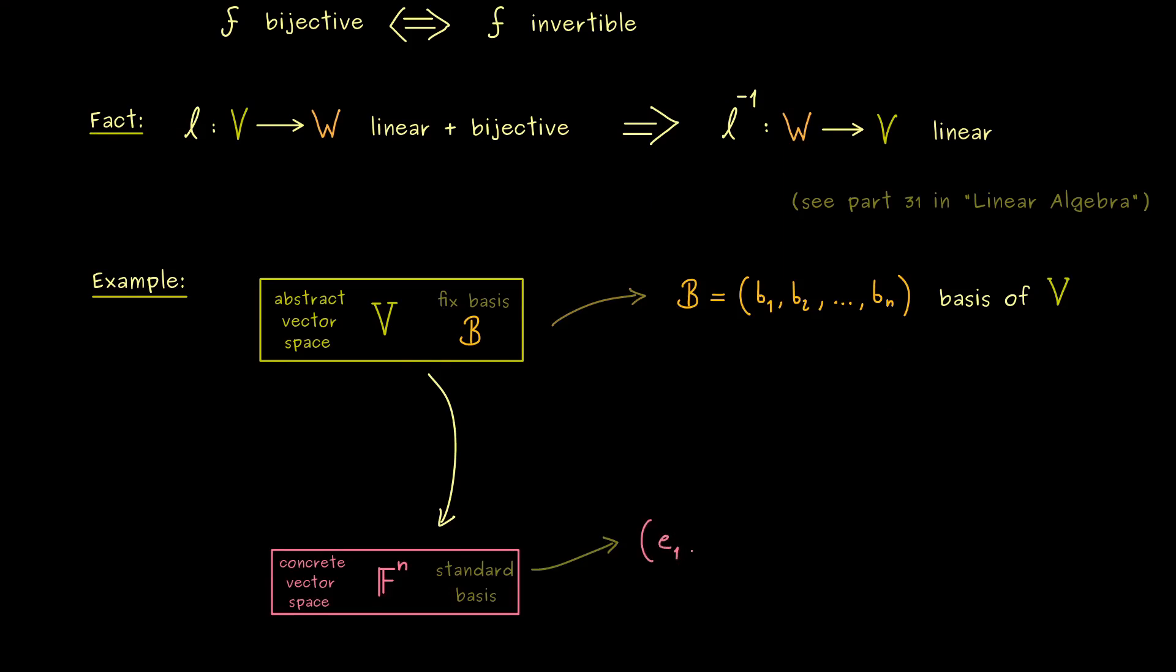And usually we denote them by e1, e2 and so on. And now we can just define our linear map phi_B by sending each basis vector here to the corresponding canonical unit vector on the bottom level.